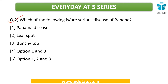The second question is: which of the following is a serious disease of banana? The options are Panama disease, leaf spot, and bunchy top. Is it only options one and three, or all three? The answer is all three — options one, two, and three. So Panama disease, leaf spot, and bunchy top are three specific serious diseases of banana crop.